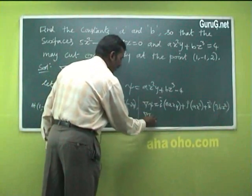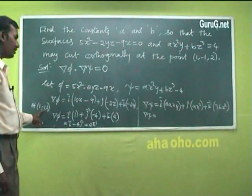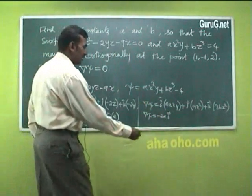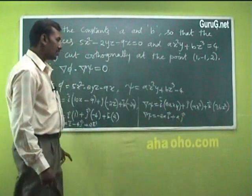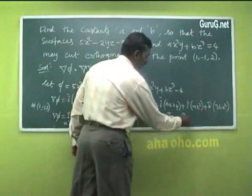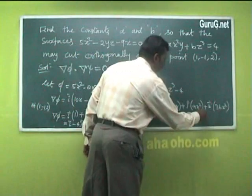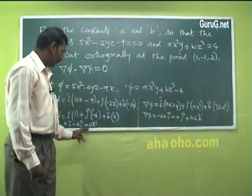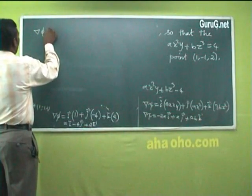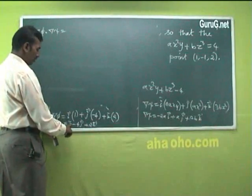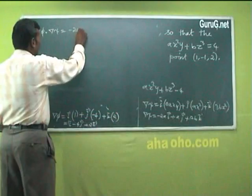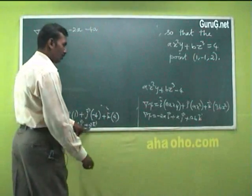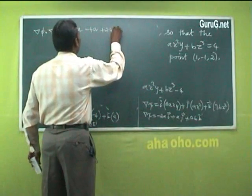At (1, −1, 2): del ψ = i·(2A(1)(−1)) + j·(A(1)²) + k·(3B(2)²) = −2Ai + Aj + 12Bk. Applying the orthogonality condition del φ · del ψ = 0: (1)(−2A) + (−4)(A) + (2)(12B) = 0, giving −2A − 4A + 24B = 0.